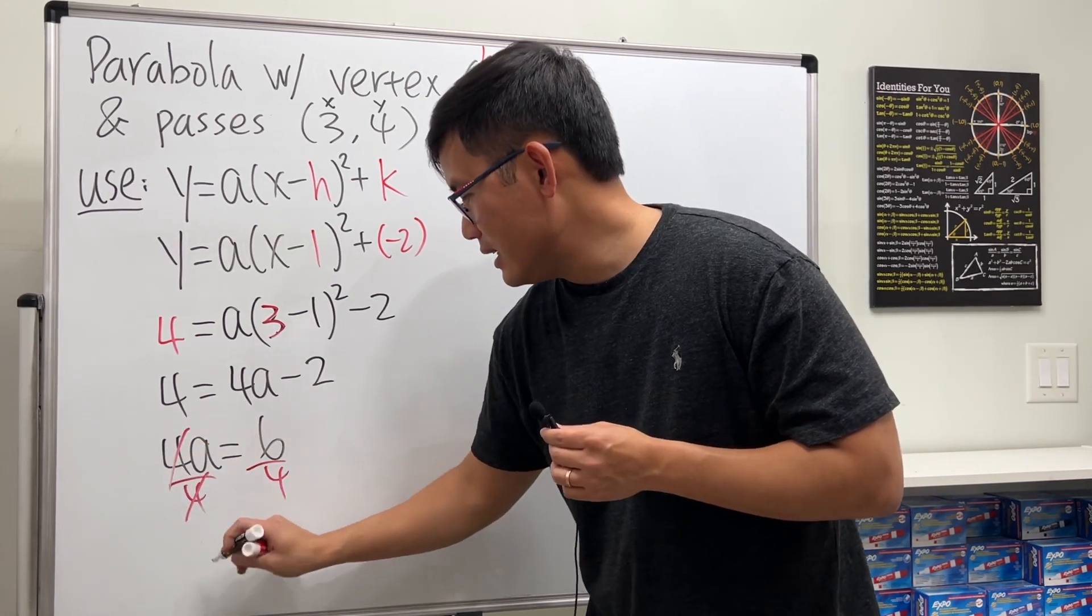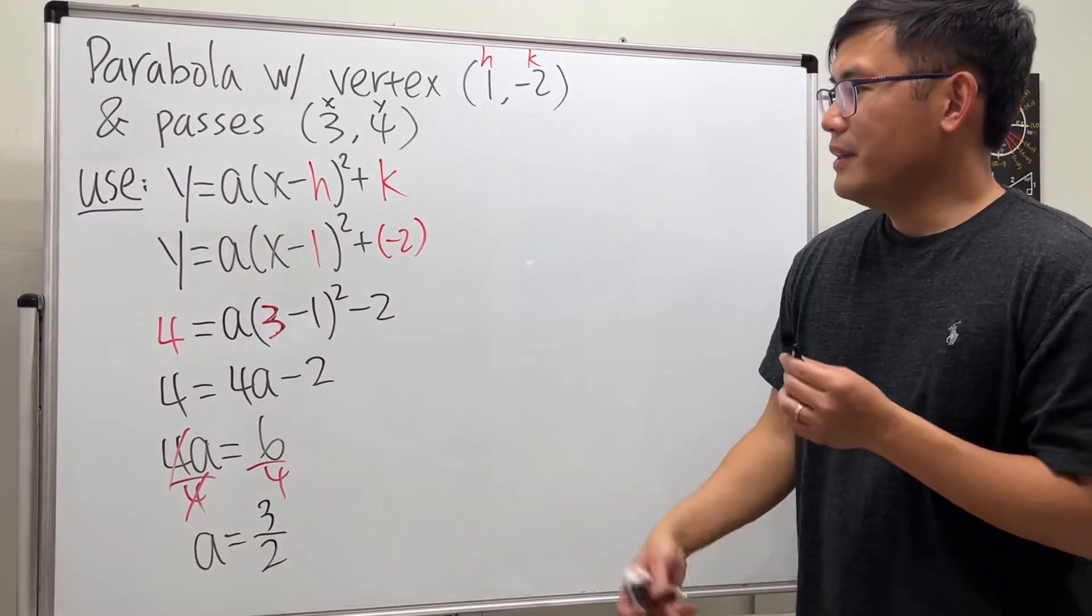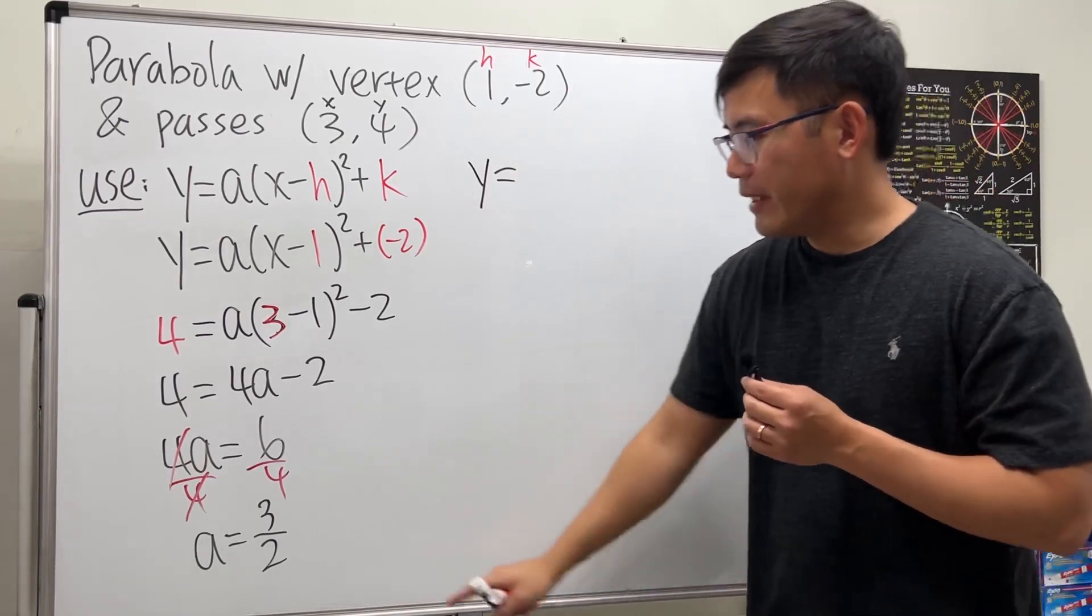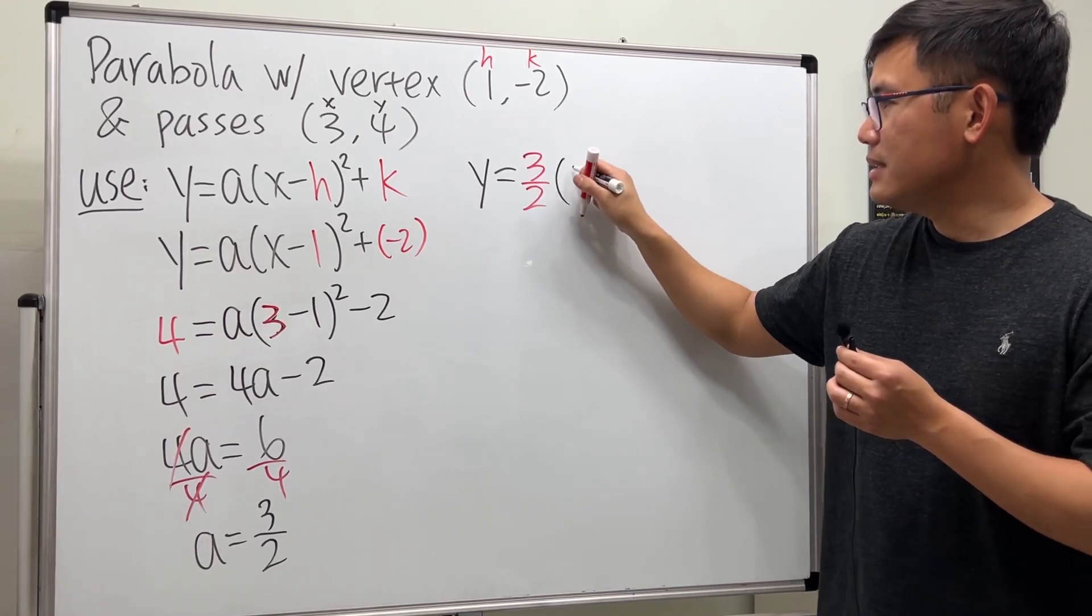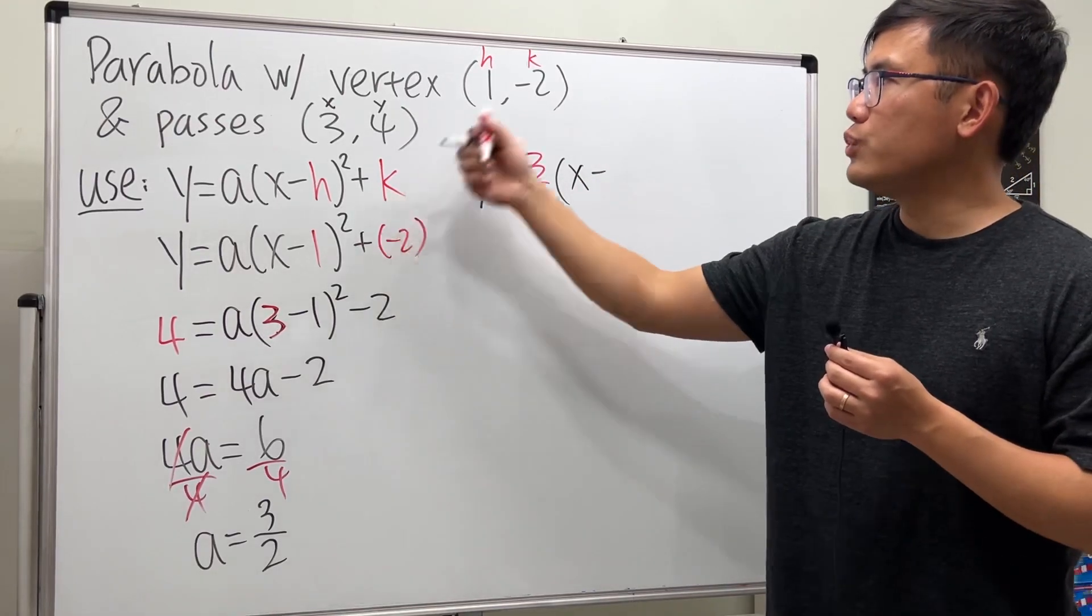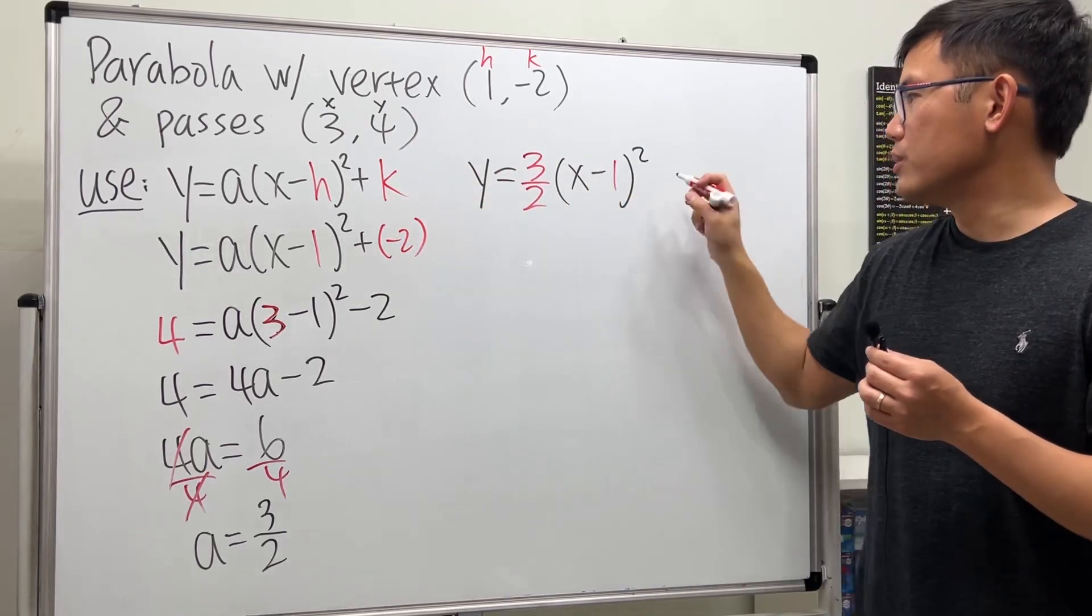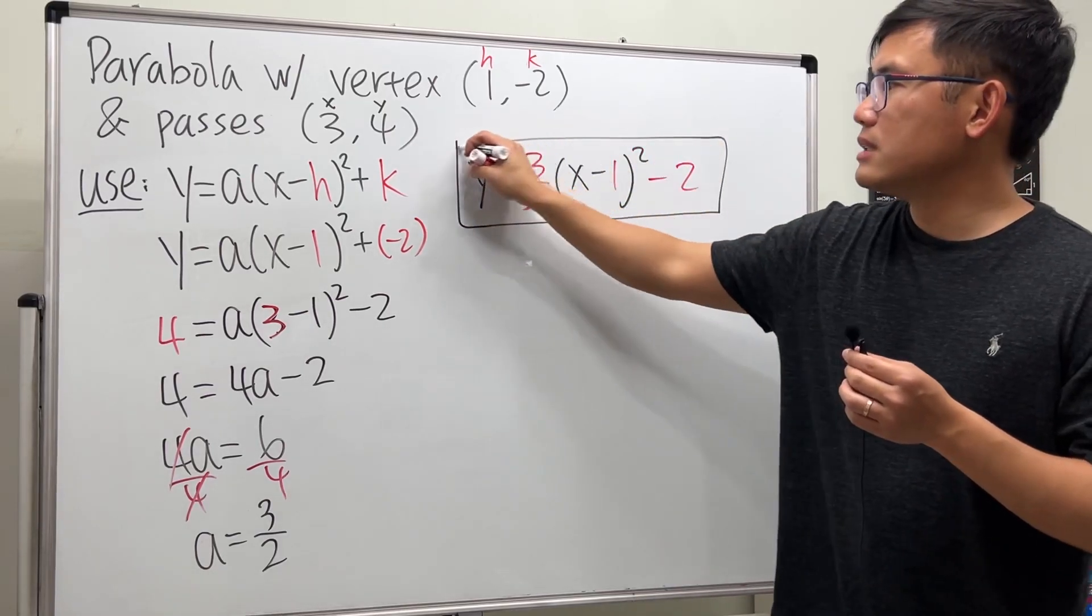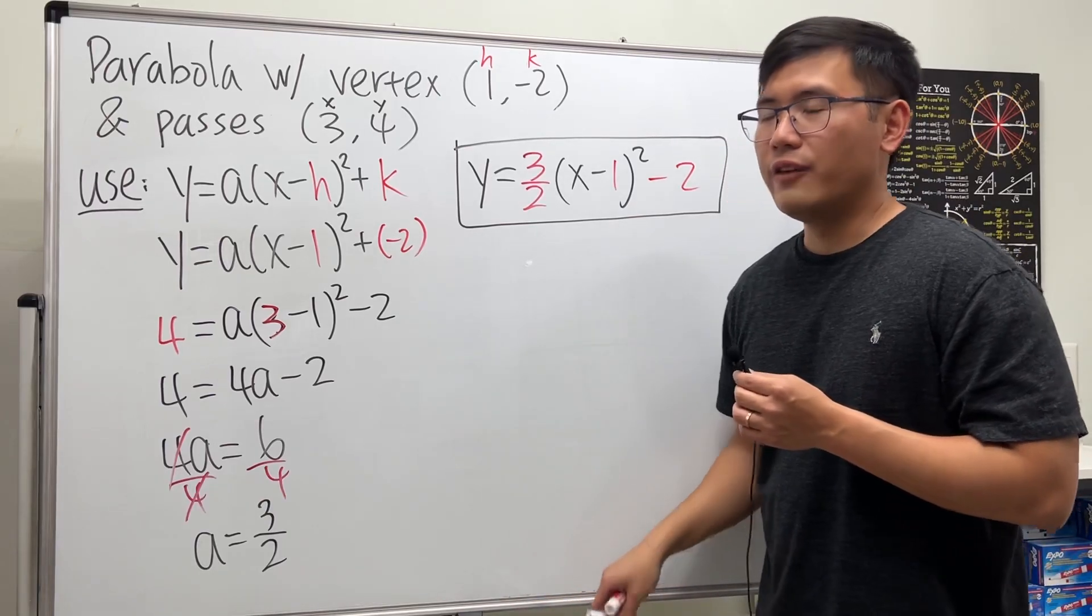So we can see a is equal to 3 over 2, and now we're pretty much done. y is equal to a is 3 over 2 times x minus h we know is 1 and then square that. k is negative 2, so we can just say that's minus 2. So with that we are done, and if you want the equation in the standard form, then you do the following.